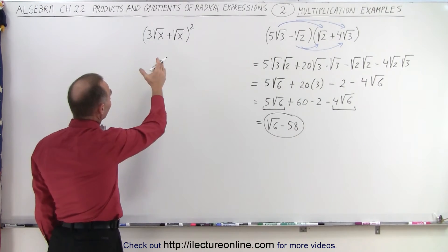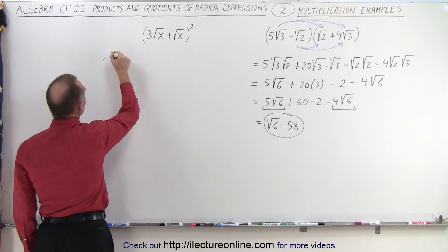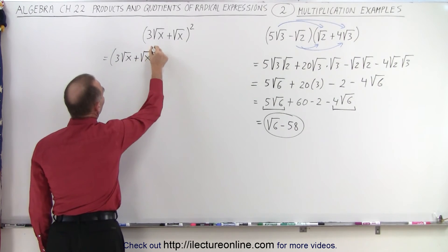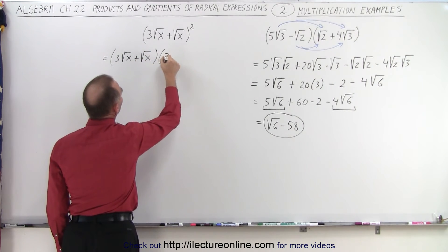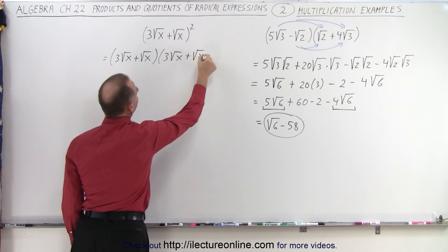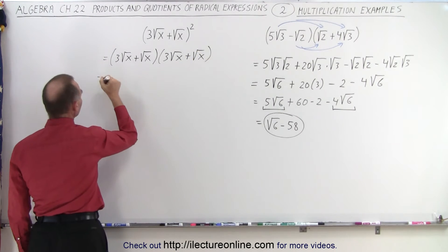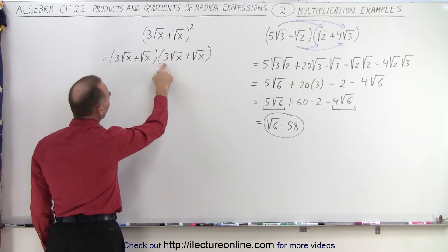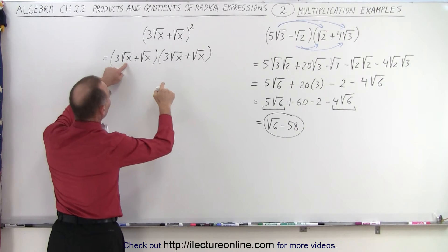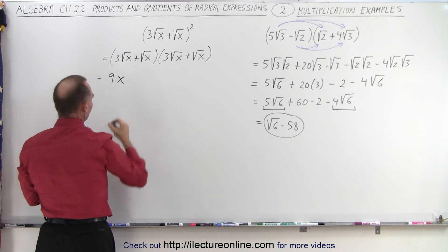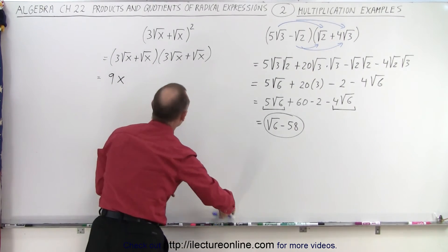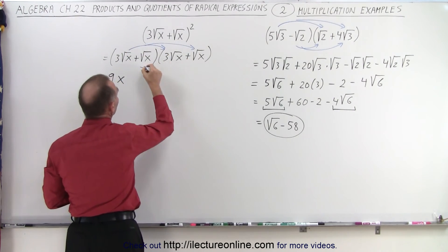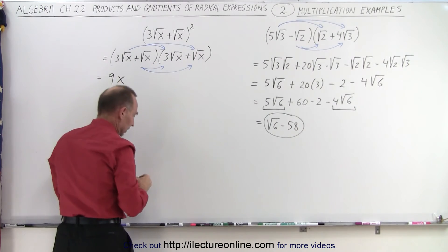Over here, we have a binomial squared, which in essence means that we take the binomial and multiply it times itself. Sometimes it makes it easier when we write it in this format first. And now we'll go ahead and multiply this out. So we have three times the square root of x times three times the square root of x. That gives us nine, and the square root of x times the square root of x, that's simply x. Sometimes it also helps if we draw little arrows so we can see what we're going to multiply.